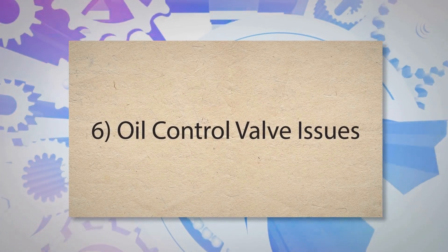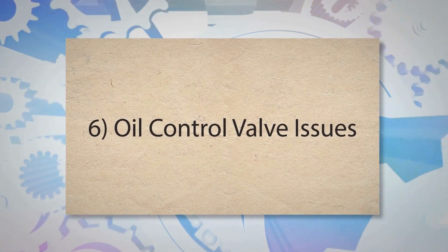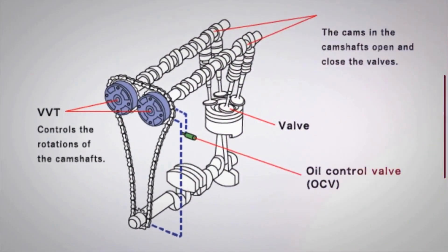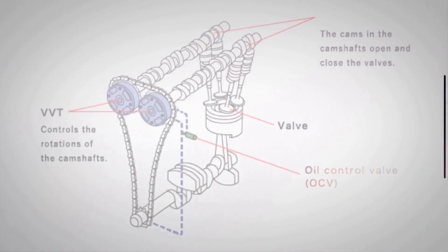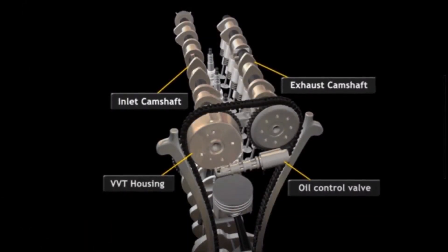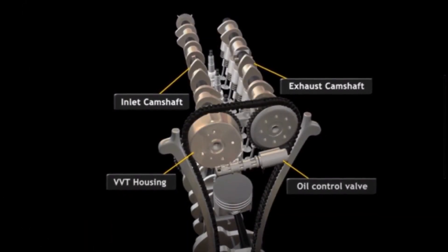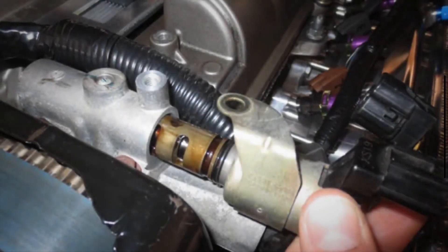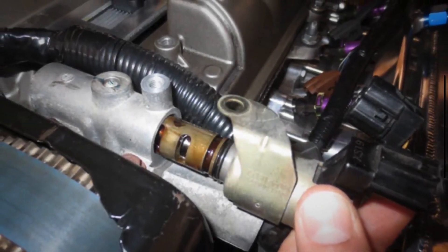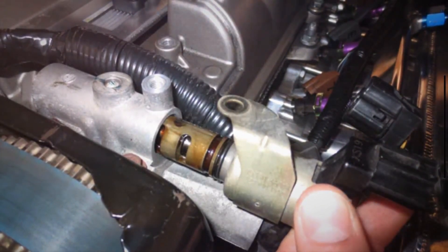Cause 6: Oil control valve issues. The oil control valve regulates the oil flow to the VVT system. A malfunctioning valve can disrupt the precise control of the camshaft timing, causing it to advance too much. This can occur due to electrical faults, clogging, or mechanical failure of the valve.